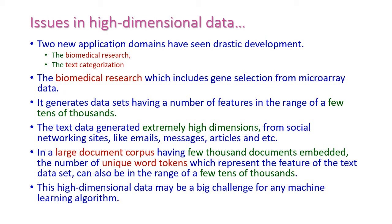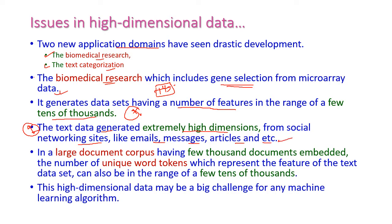Let us see two important domains which deal with very high dimensional data. The first one is biomedical research, and the second one is text categorization. In biomedical research, it includes gene selection from microarray data, which generates a dataset having a number of features in the range of tens of thousands. The next one is text categorization, which is also an extremely high dimensional dataset. Data may be collected from social networking sites, email messages, articles, and so on. A large document corpus can have few thousands of documents, and the count of unique word tokens may be in the tens of thousands.